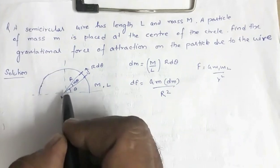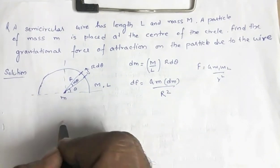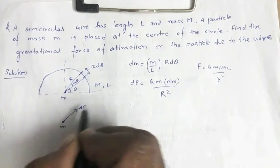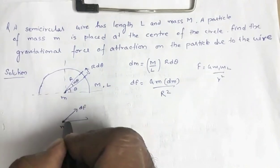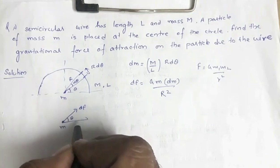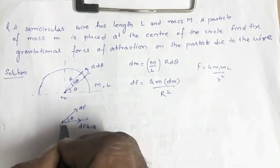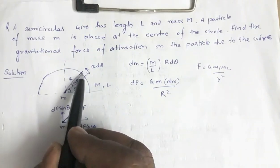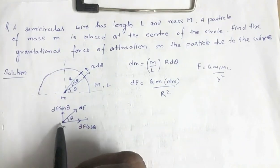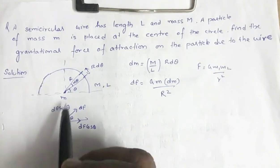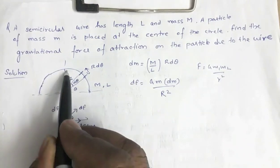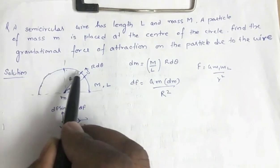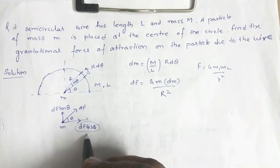This force is directed towards the small element — that is the direction of dF on mass m. The angle is θ, so this dF force can be resolved into dF·cos θ and dF·sin θ components. For this element, there will be an identical element on the other side for which dF·cos θ components point in opposite directions and cancel out, while the dF·sin θ components both point upward and add up.